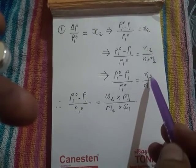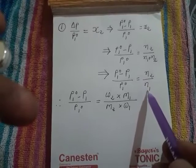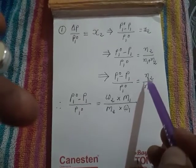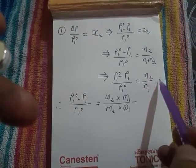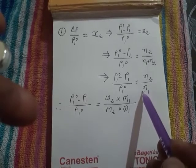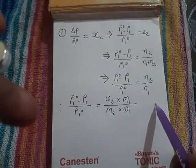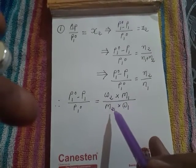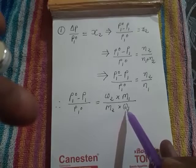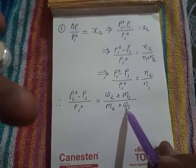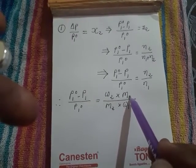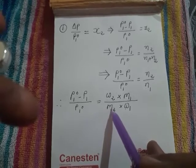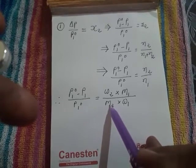According to definitions of moles, N₂ is nothing but W₂ by M₂. N₁ is nothing but W₁ by M₁. What is W₂? That is the weight of solute dissolved. W₁ is the weight of solvent taken. M₁ is the molar mass of solvent. M₂ is the molar mass of solute.